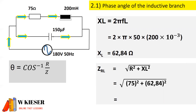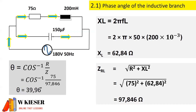To determine the impedance across the inductive branch, it'll be the square root of R squared — 75 squared — plus the inductive reactance squared. Therefore the impedance is 97.846 ohms. Now we can determine the phase angle: cos to the minus 1 of the resistance of 75 ohms over the impedance of 97.846, giving a phase angle of 39.96 degrees.